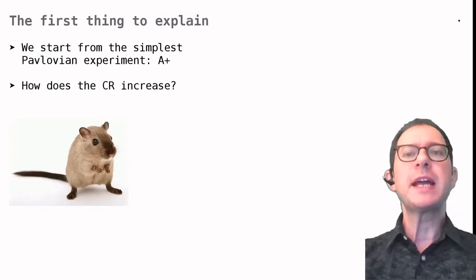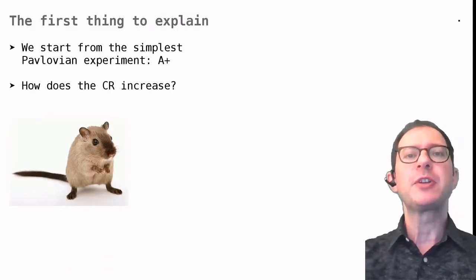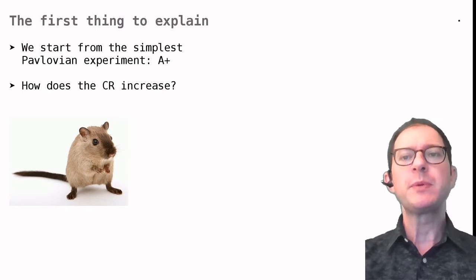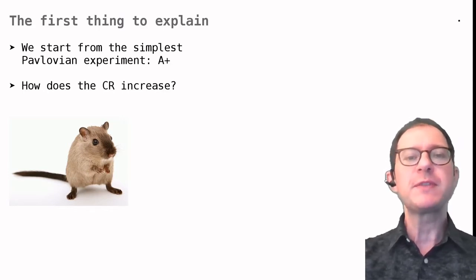Eventually we will use RW to understand rather complex learning phenomena, but in this lesson we will talk only about the simplest Pavlovian experiment. In notation this is simply A+, that is the reinforced presentation of some stimulus A.